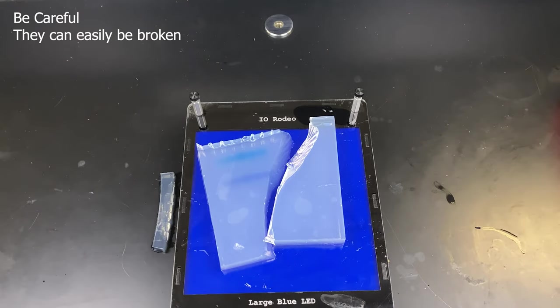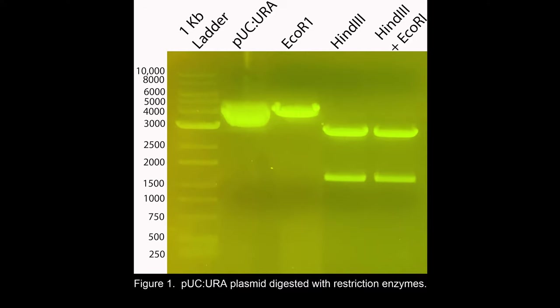You can use a smartphone. You can image it. Bring this to your computer, and we can edit it using whatever software you like. I had the numbers for the ladder. I can put the ladder along the side. And we can see our uncut plasmid, Pukura. It's supercoil. It's quite large.